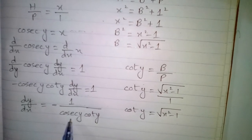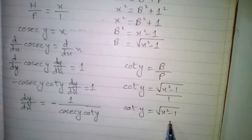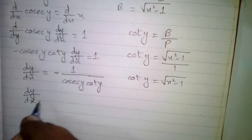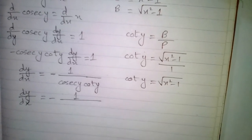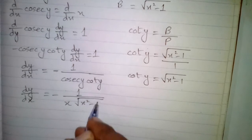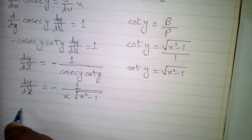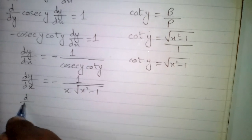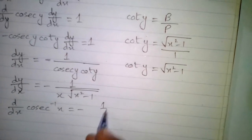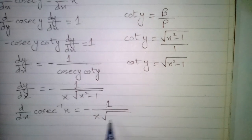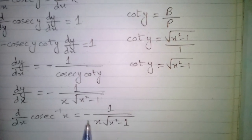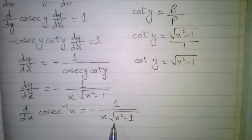Now we put the value of cosec y, which is x, and the value of cot y, which is square root of x squared minus 1, so dy by dx equals minus 1 upon x times square root of x squared minus 1. Substituting y equals cosec inverse x, the derivative of cosec inverse x is minus 1 upon x square root of x squared minus 1.